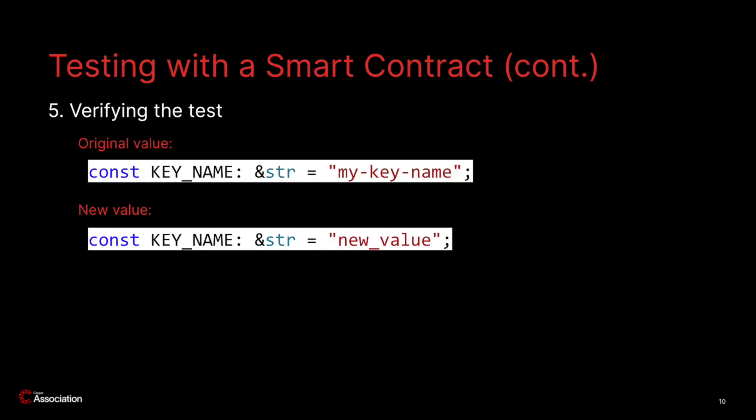Now if you successfully ran the test, you've basically verified your build environment is ready for development. However, before we conclude this lesson, let's verify that the tests are actually testing something in the code. As a brief example, open up MyProject/contract/src/main.rs, modify the key value in the contract, and then rerun the test command. You should observe that the smart contract recompiles and the test fails.